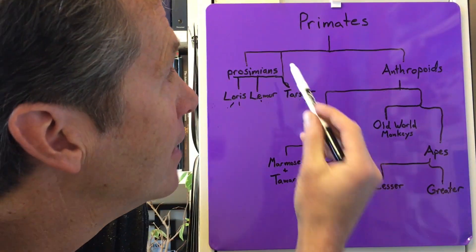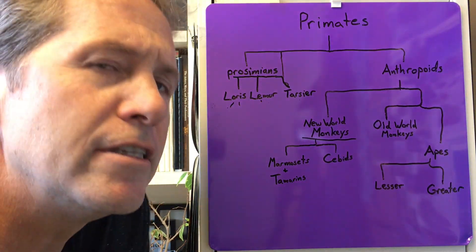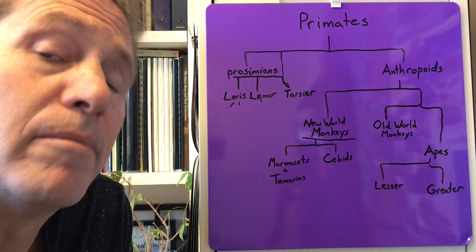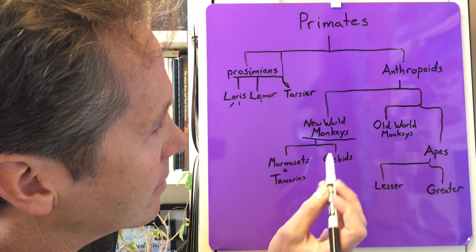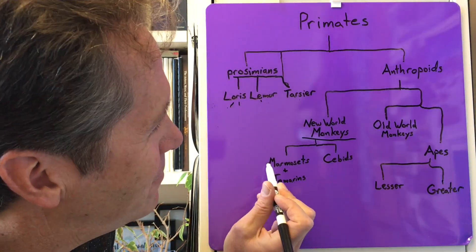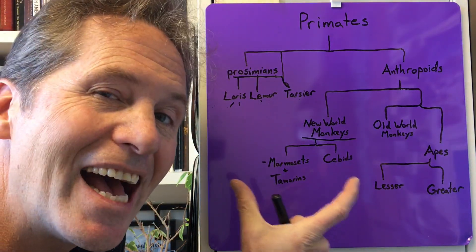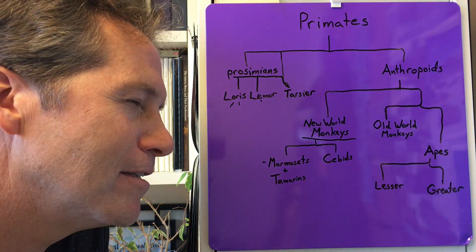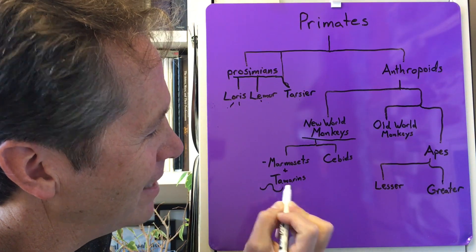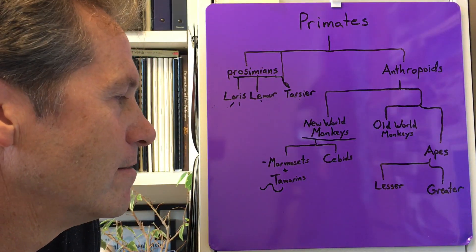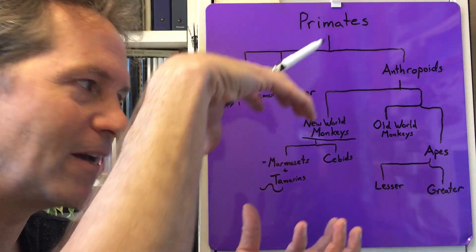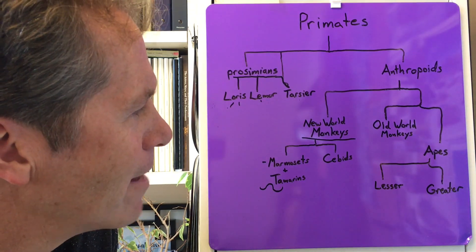In the anthropoid world you have New World monkeys — you find those in the Amazon and Central America, equatorial forested regions. There are really two categories. The first are marmosets and tamarins, known for having twins. A great example is the pygmy marmoset — those little tiny guys live in the tallest trees on the skinny branches. My favorite tamarin is the emperor tamarin with the huge white mustache. Both are physically small; when you see them in person, you realize they're smaller than you thought.